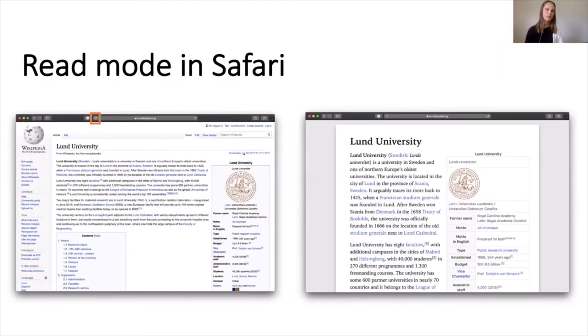Read mode in Safari. In the Safari browser, it's possible to remove content like ads, logos, etc. This makes it easier for me to read, since I only have the text which is relevant. It is also possible to change the text style and size. The picture to the right shows how the Wikipedia page is presented with the read mode.